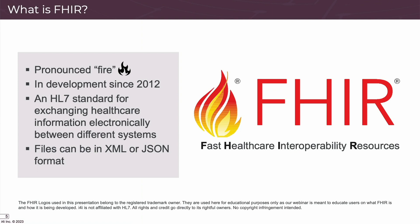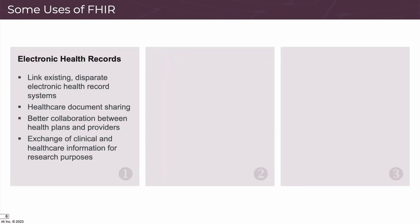The F and H in FHIR stand for Fast and Healthcare, and are pretty self-explanatory. The I is for interoperability, which is a key feature of FHIR. This interoperability opens the door to many different use cases. The most obvious use of FHIR is to link the vast array of different electronic health record systems. Medical documents such as test results, clinic letters, and imaging scans could be shared between the different systems that hold them, and healthcare providers could easily exchange information with health plan providers. Clinical and healthcare data could also be shared for research purposes — a huge step forward in improving patient care at all levels.